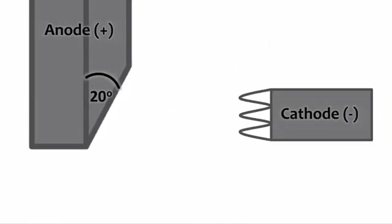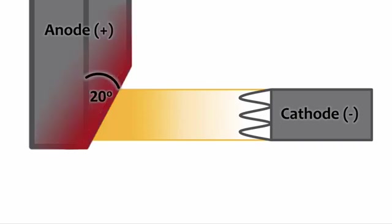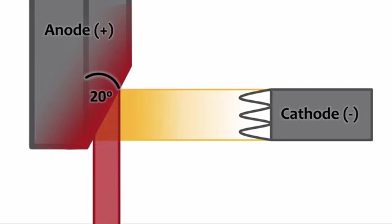Remember that the anode is usually angled between 6 and 20 degrees, and this is a good thing for two main reasons. The anode angle actually increases the surface area of the focal spot, which increases the ability of the anode to absorb heat. Additionally, the angle helps to decrease the effective focal spot size and therefore increases the spatial resolution of the radiograph.